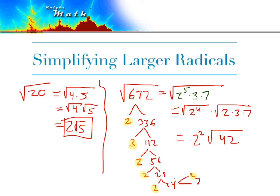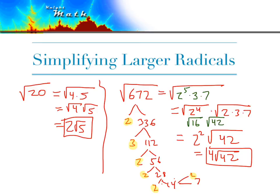The square root of 2 to the 4th is 2 squared, which is 4. And 2 times 3 times 7 is 6 times 7, which is 42. So the answer is 4 times the square root of 42. This came from 16 times the square root of 42, and you can verify: 16 times 42 equals 672. By factoring, we can see how many 4s — that's the 16 — can be pulled out.